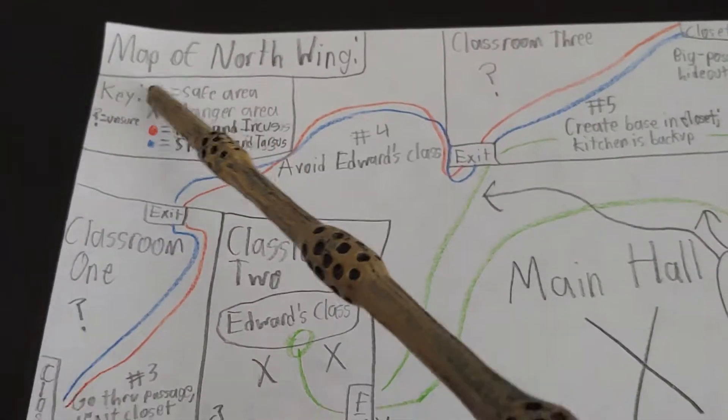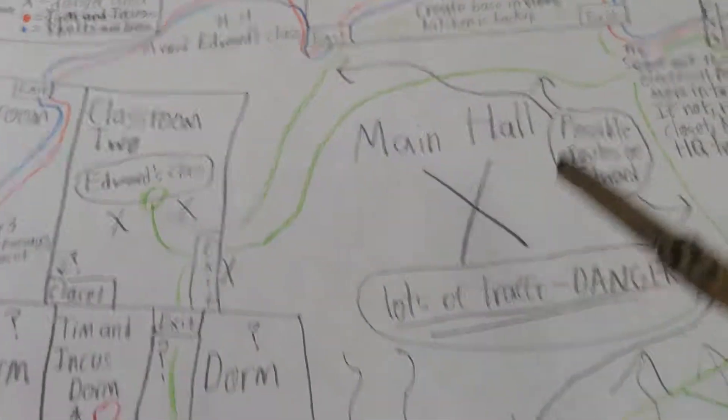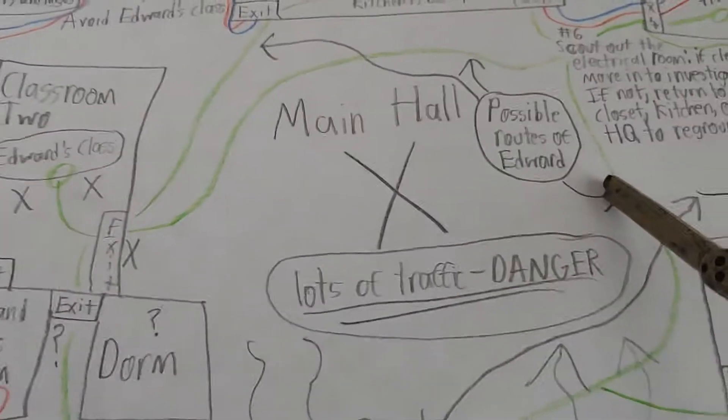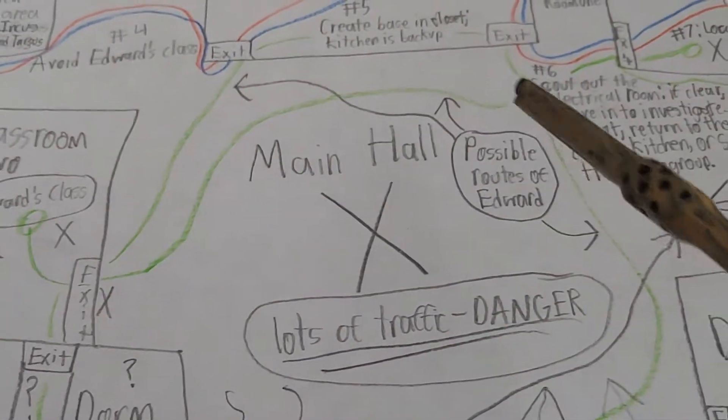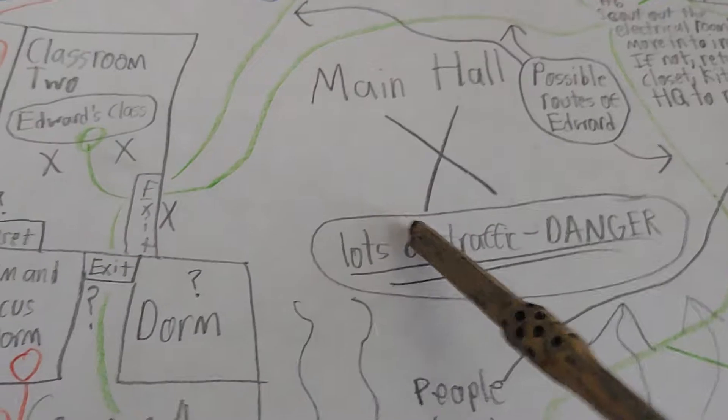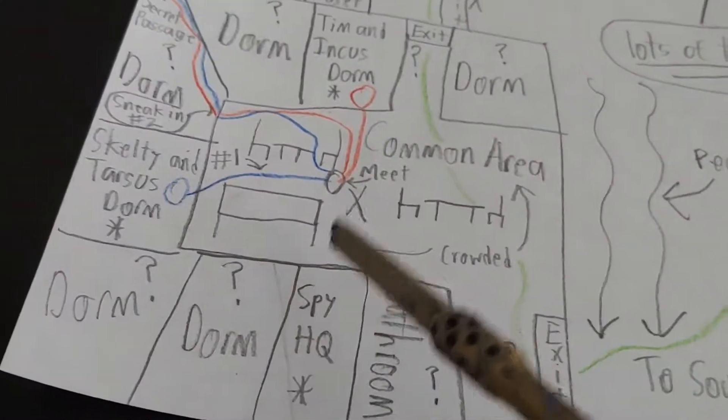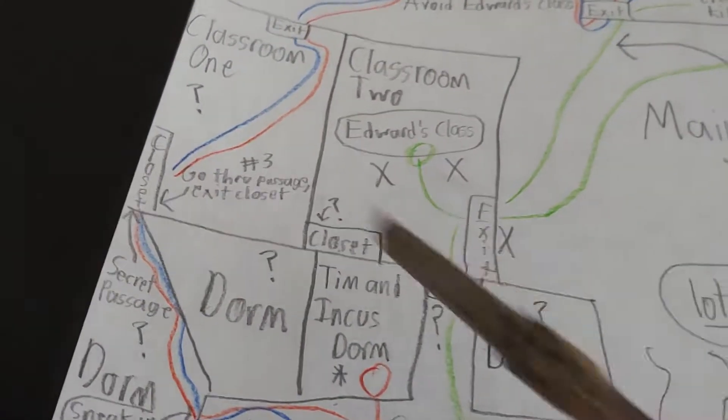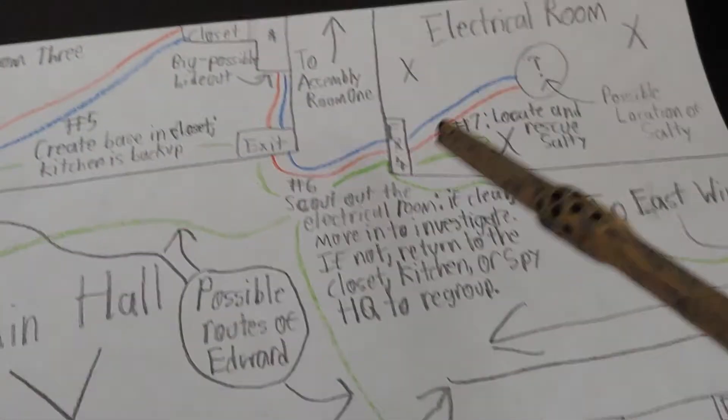Next we have X's which are danger areas. The main hallway is crowded and Edward could come through here, as you can see from these green lines showing possible routes of Edward. Lots of traffic, dangerous. Common area, Edward could come through here, dangerous. Obviously Edward's classroom is dangerous. Edward the train could also be in the electrical room.